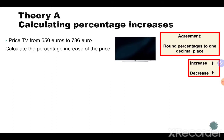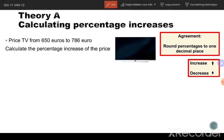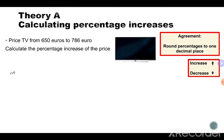Step number one: I would like to know by how many euros it increased. So in that case we're going to subtract the two numbers. To know how many euros it increased, we do 786 minus 650, and that is 136 euros. So it increased by 136 euros.